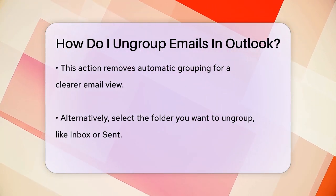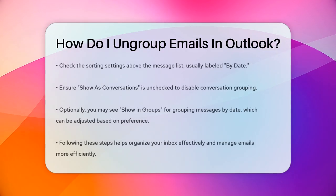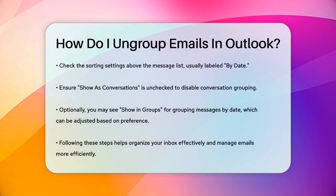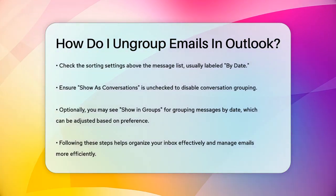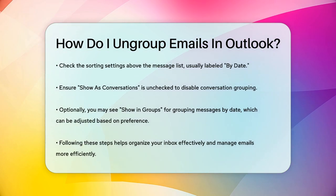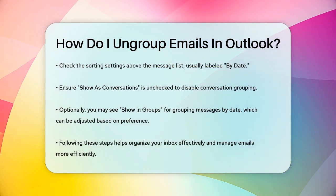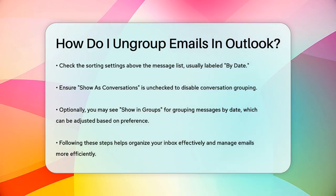Make sure there is no checkmark next to Show as Conversations. If it's checked, uncheck it to turn off the conversation grouping. You might also see an option to Show in Groups, which groups messages by date, but this is optional and up to your preference.